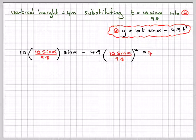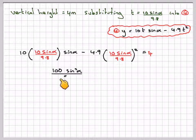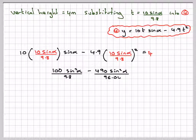This gives 100 sin squared alpha over 9.8 minus 490 sin squared alpha over 96.04 equals 4.